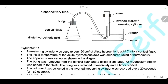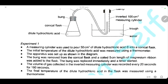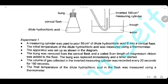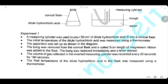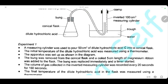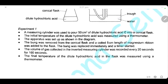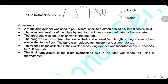The steps for the experiment are as follows. We use a measuring cylinder to measure 50 cm³ of dilute hydrochloric acid C and put it in the conical flask. Then we measure the initial temperature of the acid using a thermometer. We add a 5 cm length of magnesium ribbon, quickly close the bung of the conical flask, and measure the volume of gas collected every 20 seconds for 160 seconds. We record the final temperature after the reaction finishes.